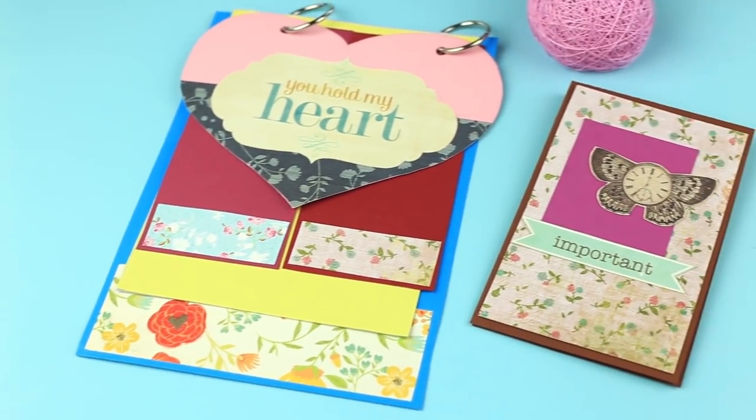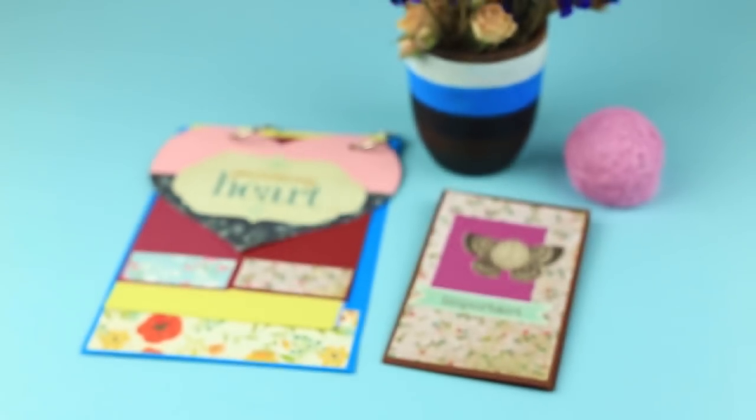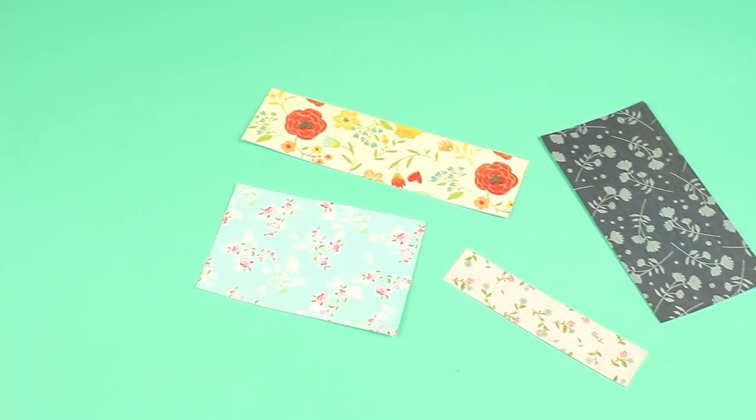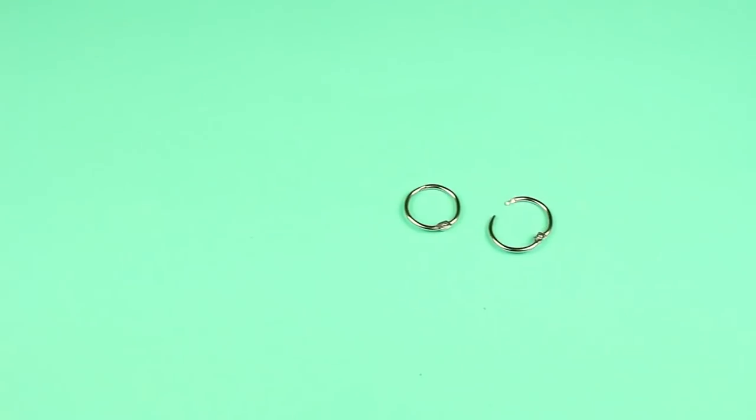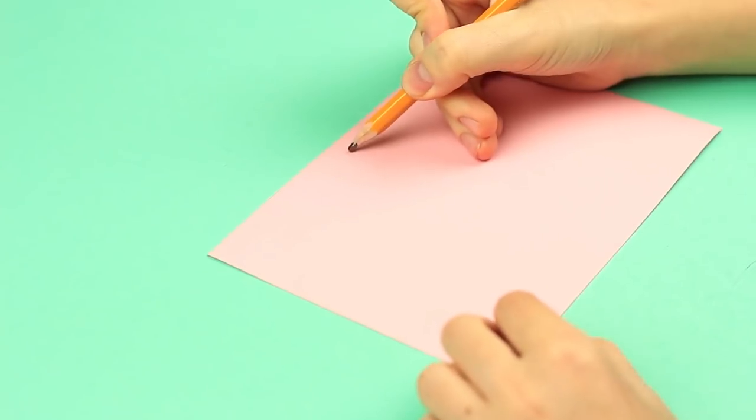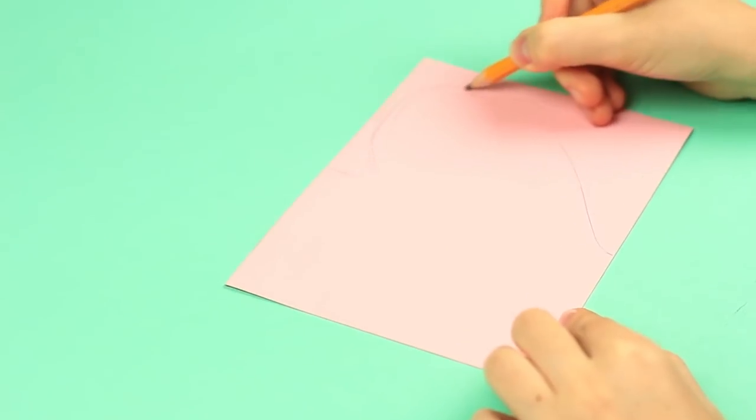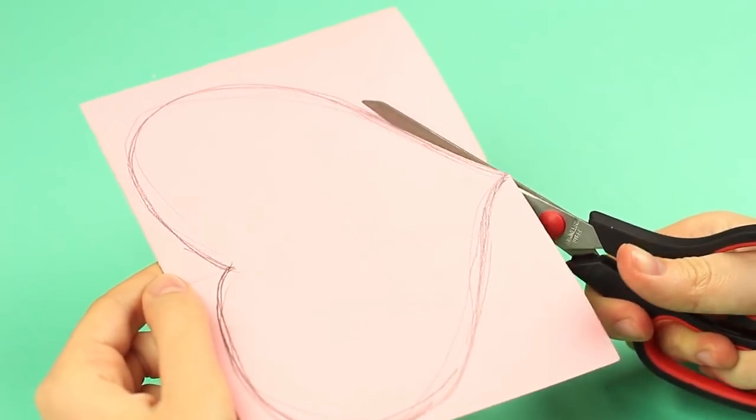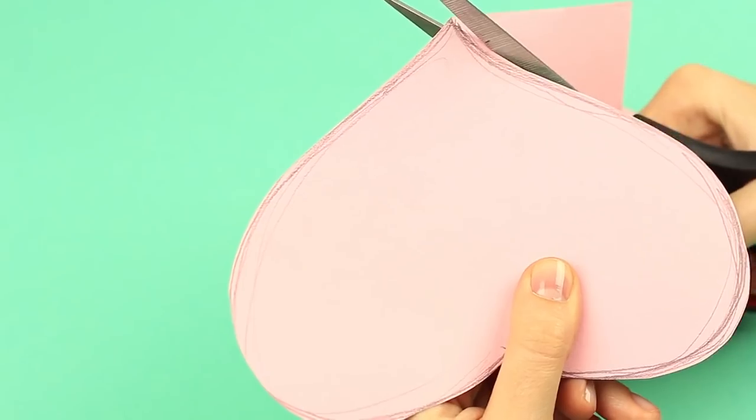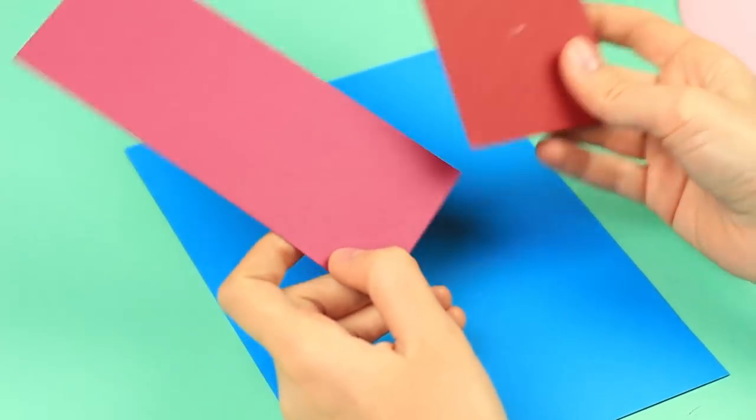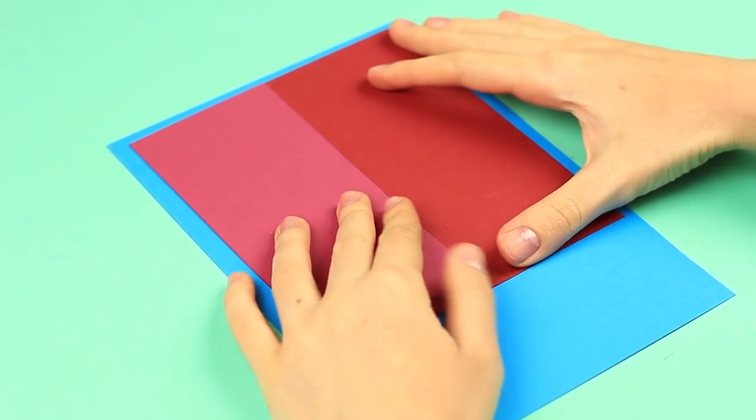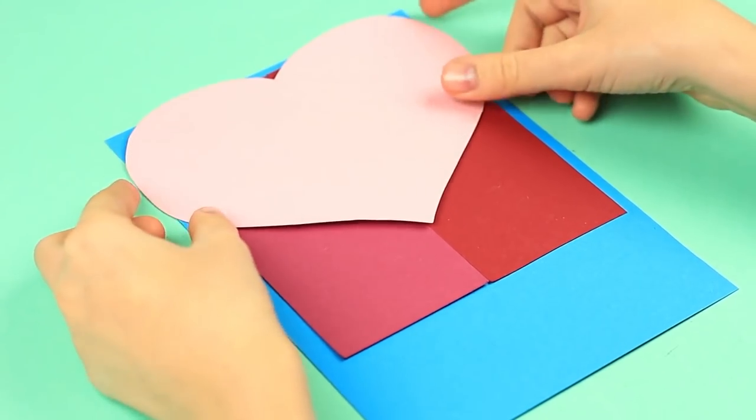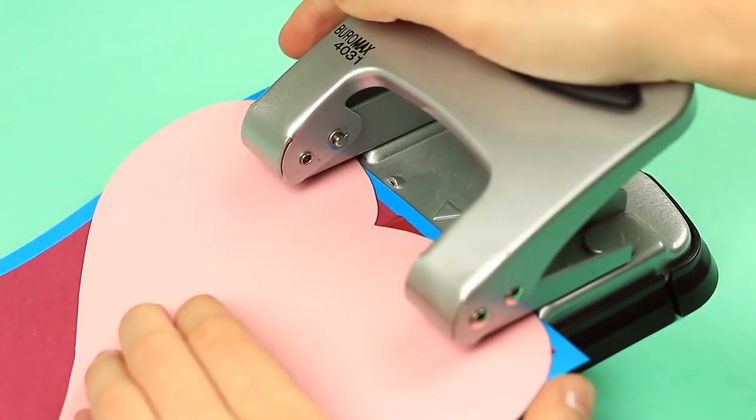In this project, we'll show you two awesome romantic scrapbook ideas. We'll need colored cardboard and paper, scrapbook paper with different floral patterns, and scrapbook binder rings. Mark the half on pale pink cardboard to draw a big heart. Cut it out. Let's see what the scrapbook will look like. Put two cardstock pieces of similar dark red shades on the blue cardboard. The heart will be a scrapbook cover. Punch holes for rings.